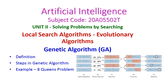In today's artificial intelligence class we will see the most popular genetic algorithm, which is one of the local search algorithms — an evolutionary algorithm from the second unit. We will see the definition of genetic algorithm, the steps to be followed to solve problems, and one example: how the 8 queens problem will be solved using the genetic algorithm.